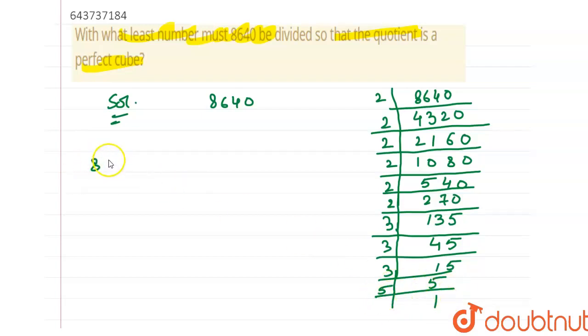So I can write 8640 is equal to 2 into 2 into 2 into 2, 1, 2, 3, 4, 5, 6 - 6 times 2 and 1, 2, 3 times 3. 3 into 3 into 3 and 1 time 5. So this is 2 raised to power 6 into 3 raised to power 3 into 5 raised to power 1.